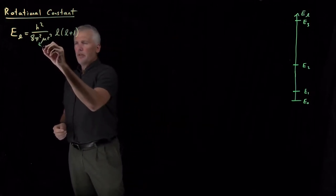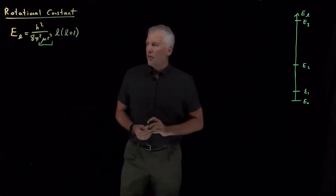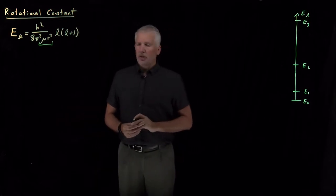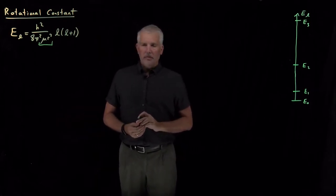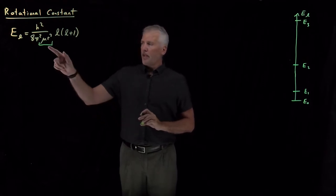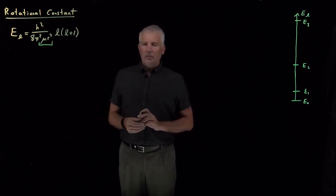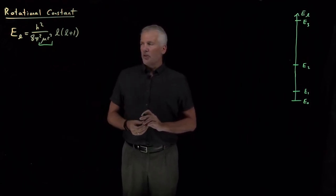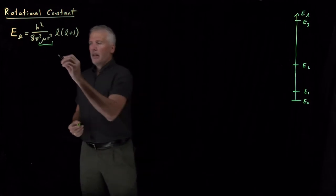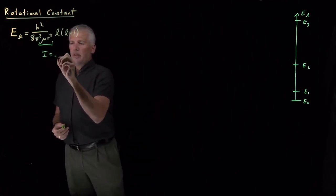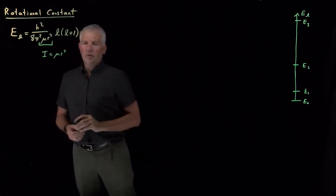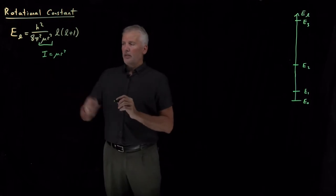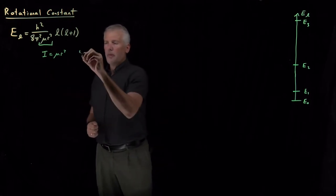First of all, this quantity — if you are particularly familiar with your freshman year physics — this quantity might sound familiar. Mu times R squared is a quantity that we can give a name to; it's called the moment of inertia.